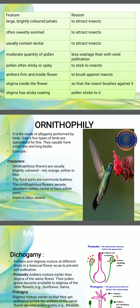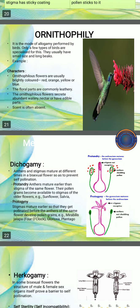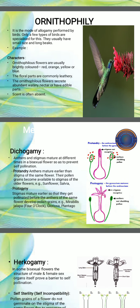Next is ornithophily. Ornithophilous flowers are pollinated with the help of birds. Their various features are that they are brightly colored — red, orange, yellow, or blue — and the floral parts are usually leathery. These flowers secrete abundant water or nectar with edible parts. Scent is mostly absent because birds lack olfactory glands, so they cannot smell, and there is no need to attract them through scent.